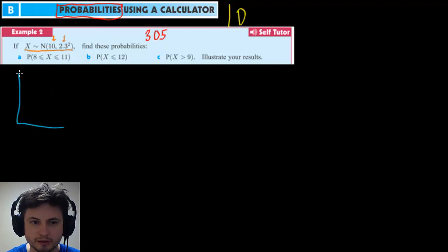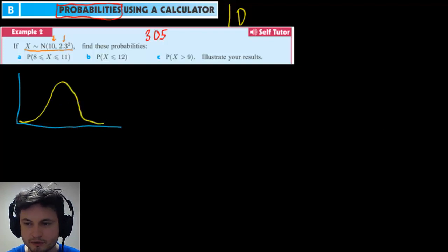If we were to draw this, it's going to be a normal distribution graph. Also known as the bell curve. So it looks like this. You have the mean right here and the mean here is 10.